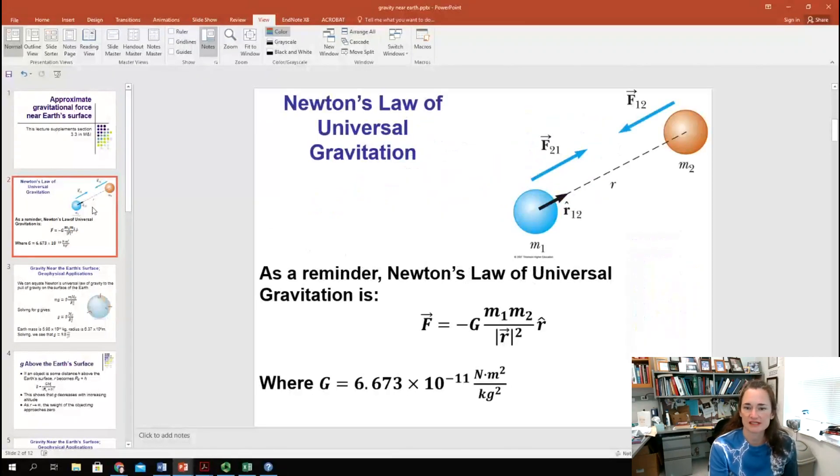As a reminder, in a previous lecture, we defined Newton's Law of Universal Gravitation as the following. The force between any two bodies with mass would be equal to minus G times the product of the masses, m1, m2, divided by the center-to-center distance between the masses, r squared, and then times r hat, where r hat is a unit vector that points along the line connecting the two masses. The negative sign indicates that the force is attractive. Now here, big G is the universal gravitational constant, and the value of that gravitational constant is 6.673 times 10 to the minus 11 newton meters squared per kilogram squared.